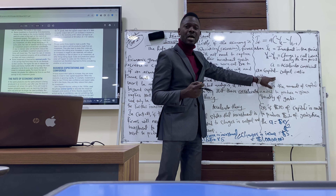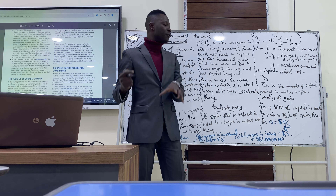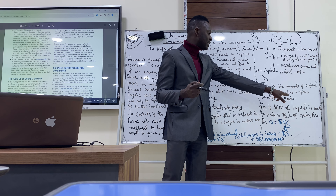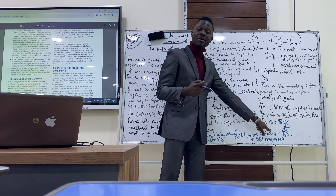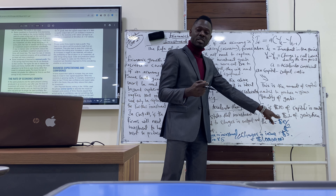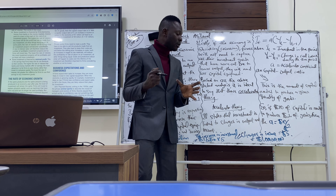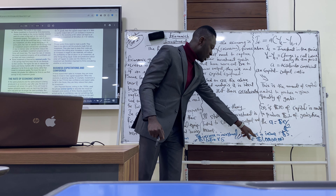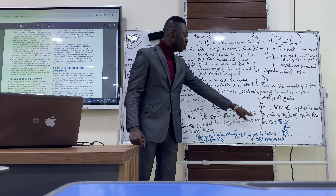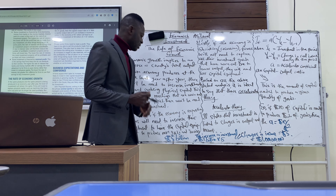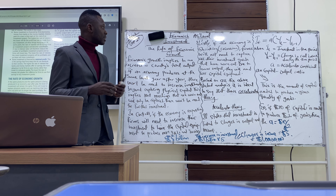Our accelerator coefficient is the capital output ratio — the amount of capital needed to produce a given quantity of goods. If $10 of capital is needed to produce $2 of goods, the accelerator coefficient is $5. So if the change in income level is $1 billion, the increase in investment will be $1 billion multiplied by $5, giving us $5 billion. The next class we're going to talk about business cost, which is also a factor of investment.